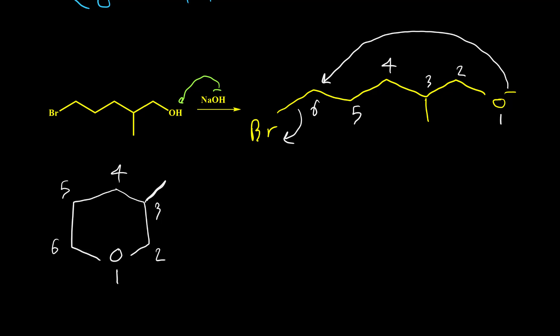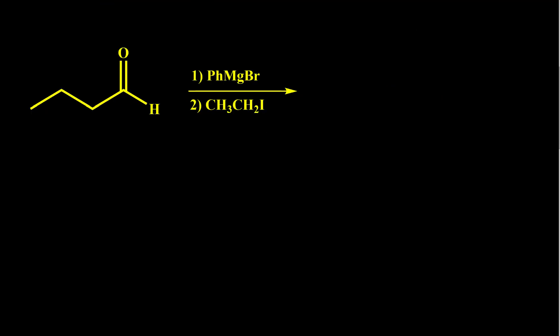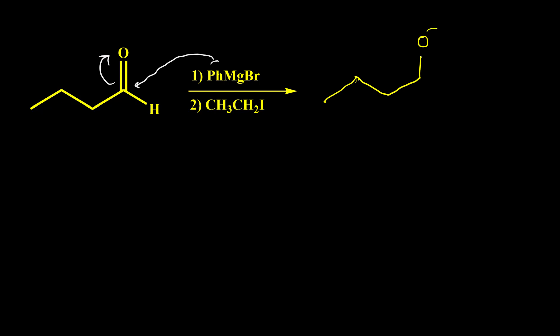The deprotonation of an alcohol is not the only method for forming an alkoxide anion. We may get an alkoxide anion after reaction of a Grignard reagent with an aldehyde or ketone. In the first example, phenylmagnesium bromide — with its carbanion on the benzene ring — easily adds to the aldehyde, pushing the double bond to the oxygen to give an alkoxide anion with a phenyl group.